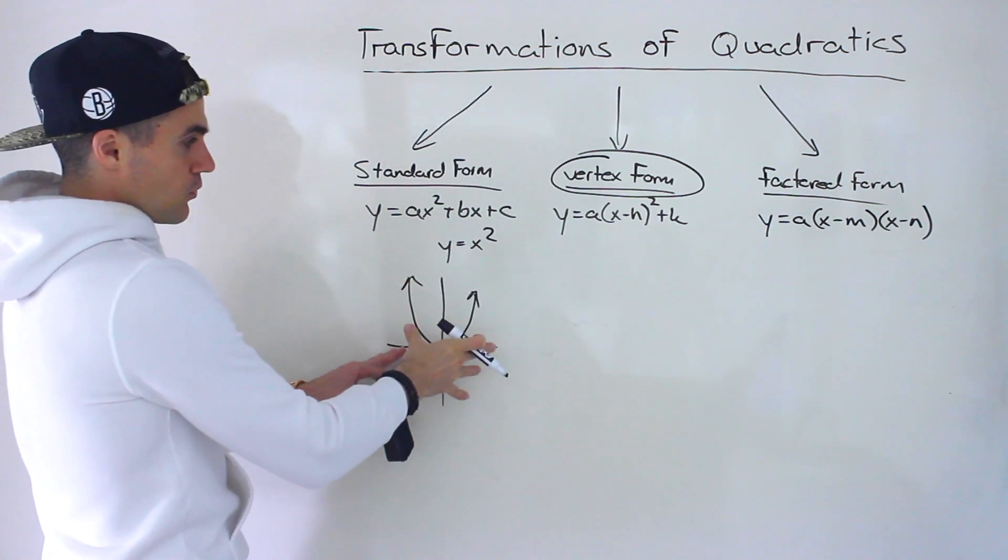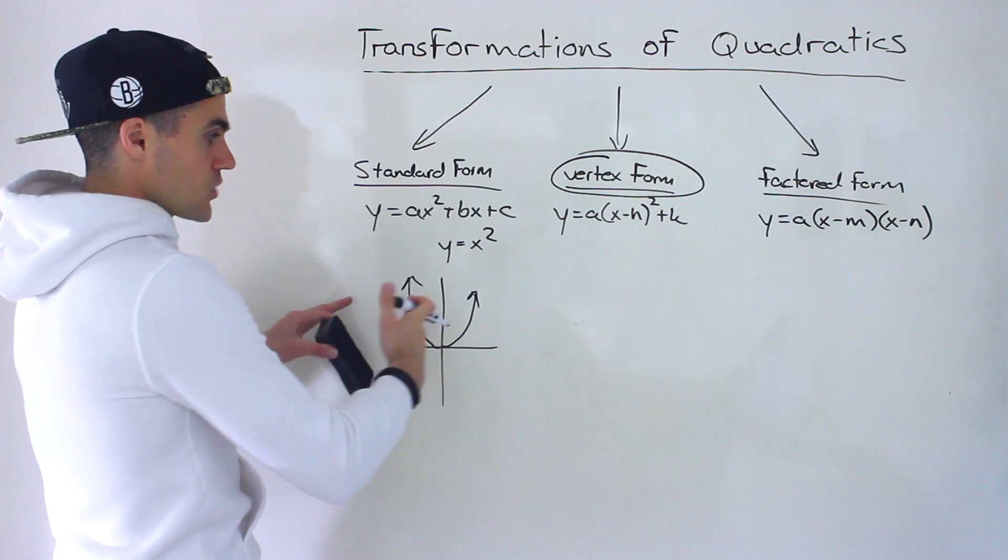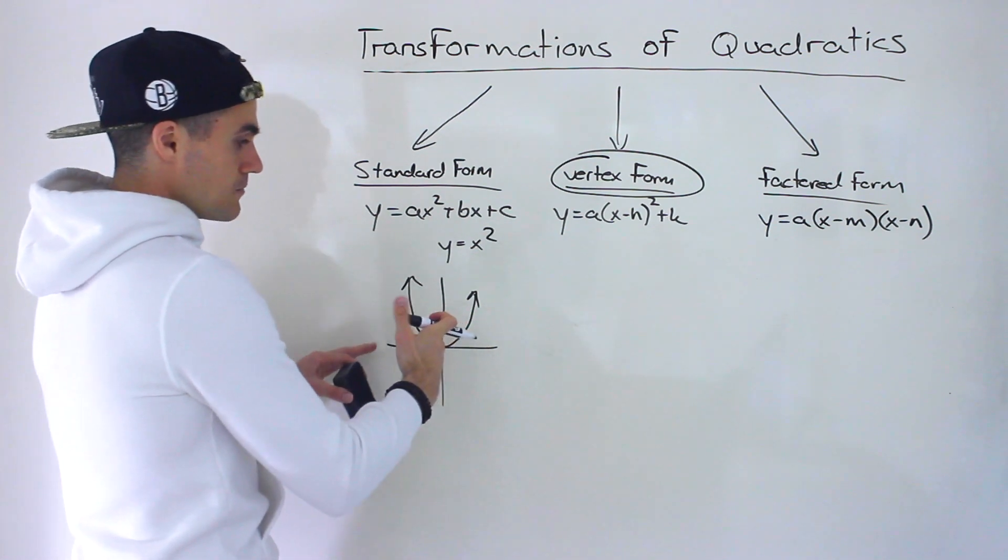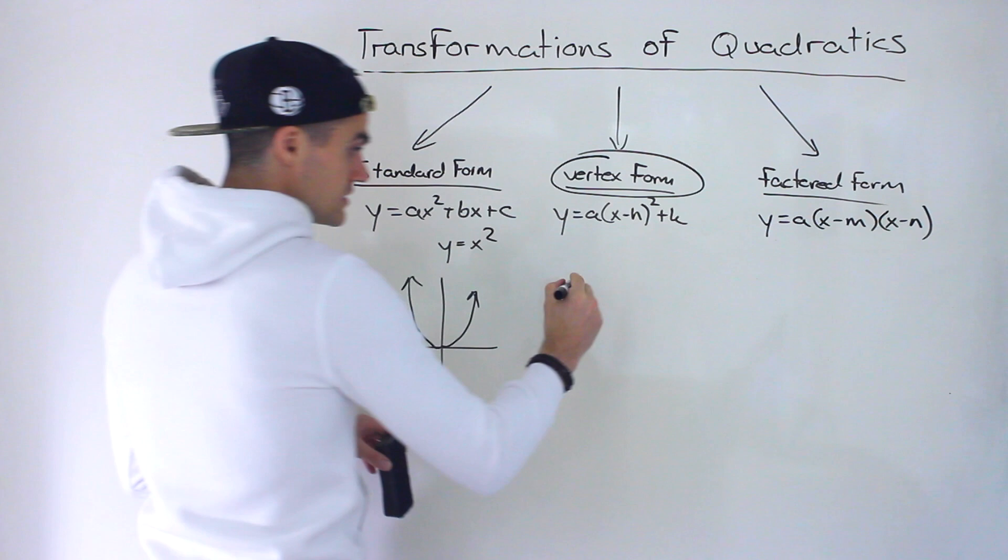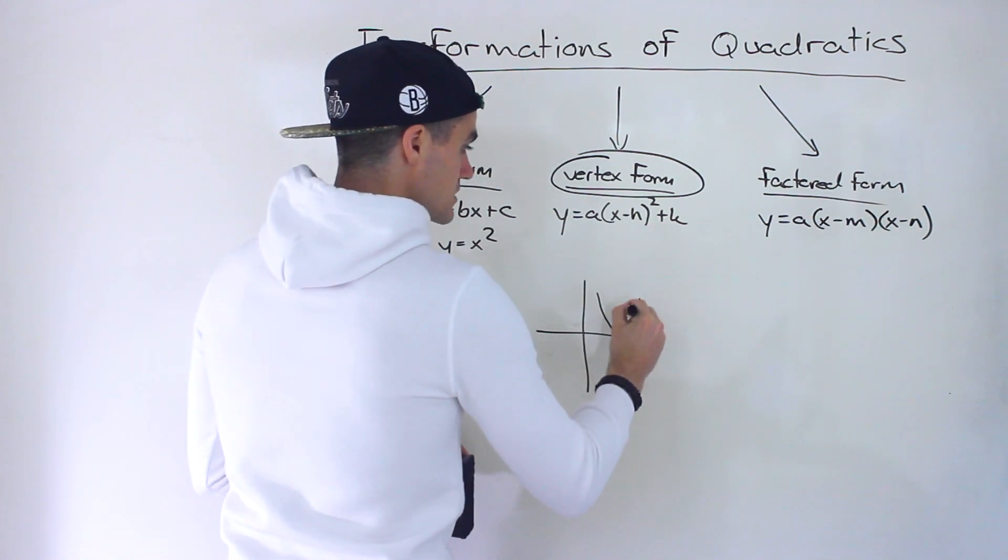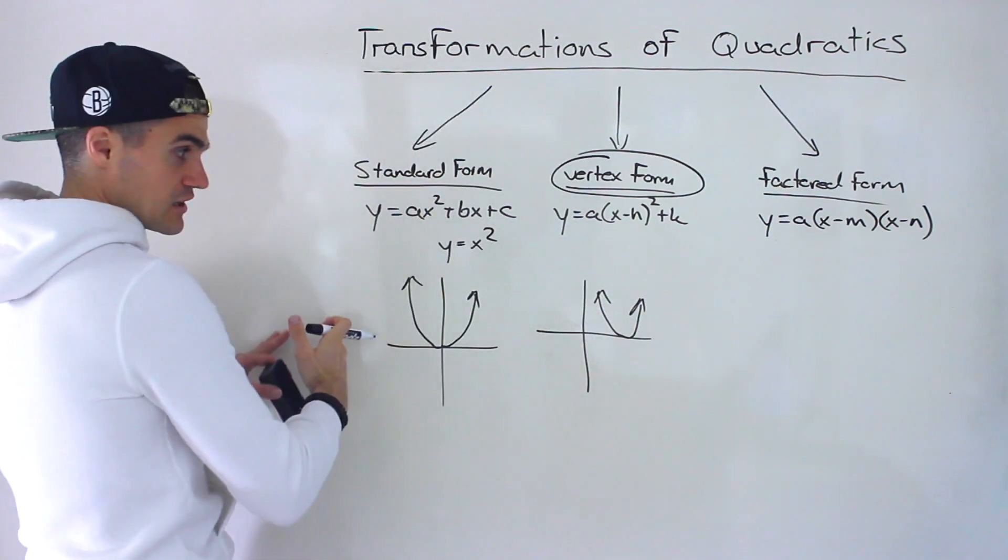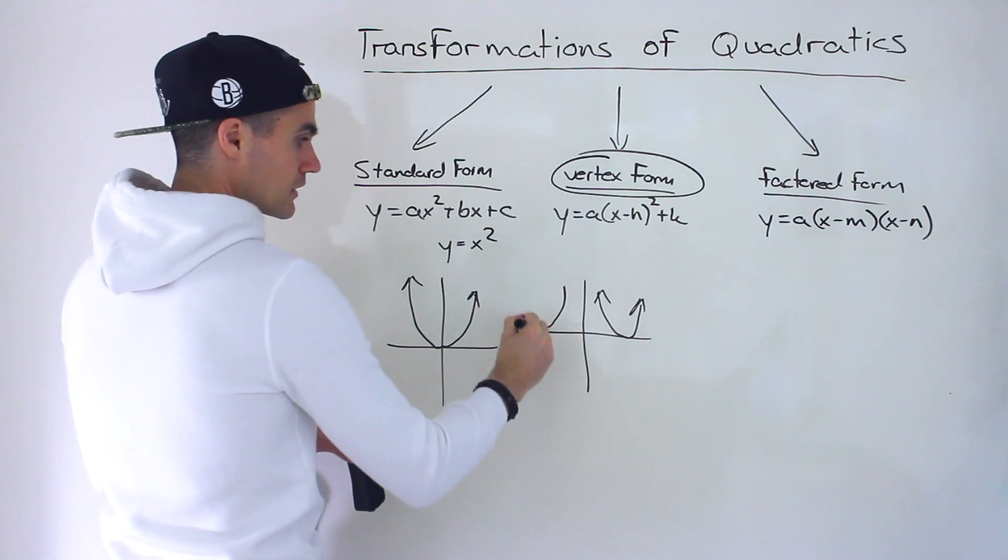And what we can do with y equals x squared is we can transform it. So we can maybe shift it to the right, for example, so then it would look like this. We could shift it to the left, so then it would look like this.